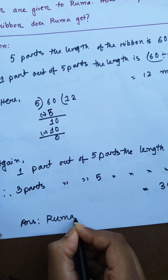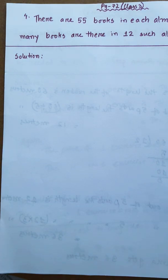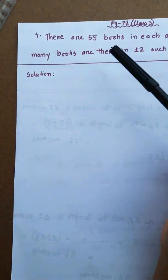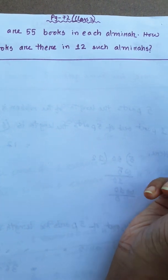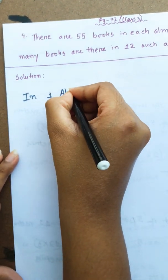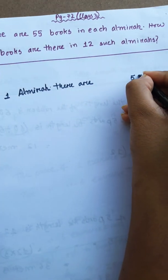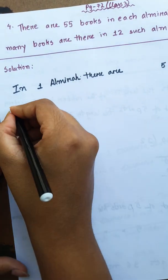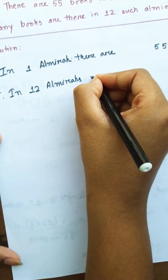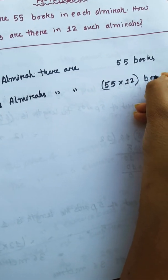On the next problem, number 4: There are 55 books in each almera. How many books are there in 12 such almeras? In 1 almera there are 55 books. Therefore, in 12 almeras there are 55 into 12 books.